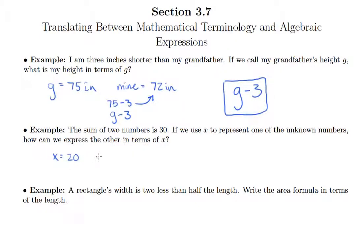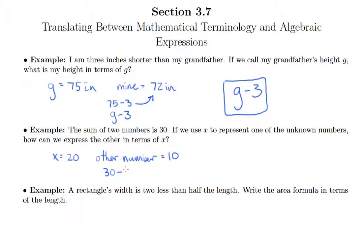If X equals 20, then the other number would be 10, because they have to add to 30. So the question is, how do you get from the fact that the sum is 30 and X is 20 to 10? Take 30 minus 20 — whatever's left over has to be the other number.